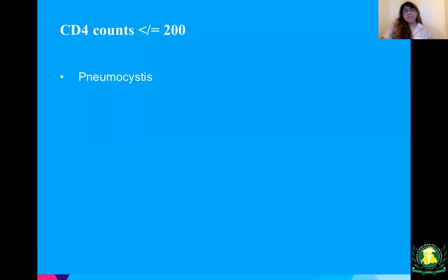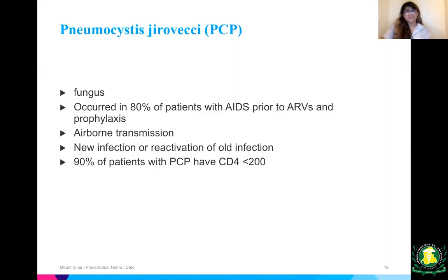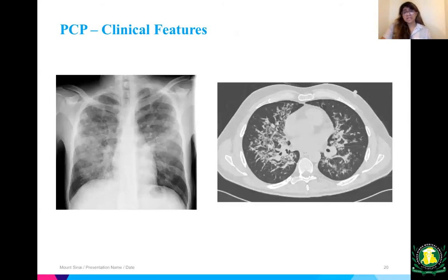When the CD4 count is less than 200, think of Pneumocystis jirovecii — also called PCP pneumonia. It's a fungus that occurred in 80% of patients with AIDS prior to antiretrovirals and prophylaxis. This is airborne transmission and can be a new infection or reactivation. 90% of patients with PCP pneumonia have a CD4 count less than 200. I'll go over treatment and prophylaxis in a later lecture. Here is a very typical CT scan and a fluffy-looking chest X-ray seen with PCP pneumonia.